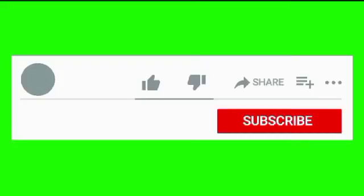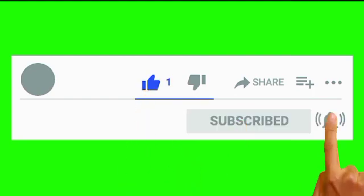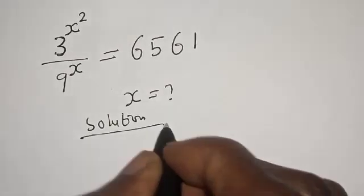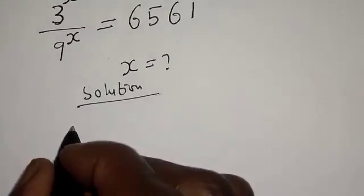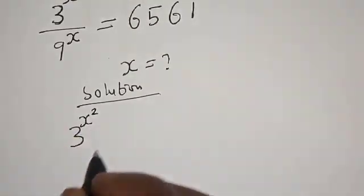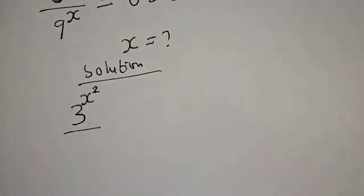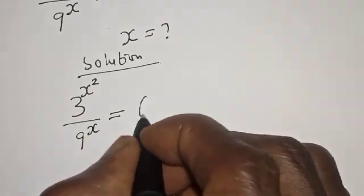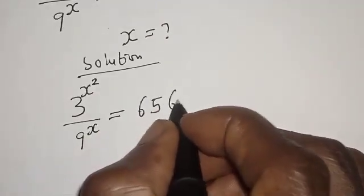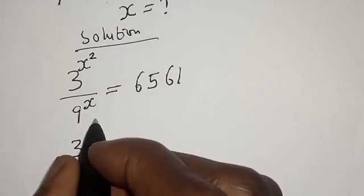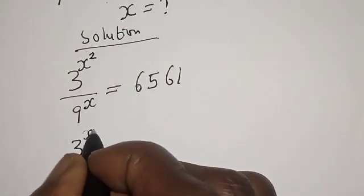Before we proceed, please don't forget to like, share, comment and subscribe. Thank you. Solution: we have the given equation 3 raised to power s squared over 9 raised to power s is equal to 6561.